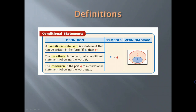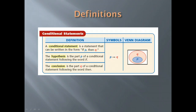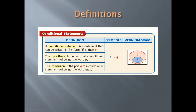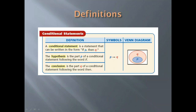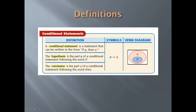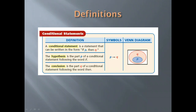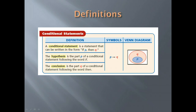Let's start with the definition. A conditional statement is a statement that can be written in the form: if P, then Q. The hypothesis is the P part of a conditional statement following the word 'if.' The conclusion is the Q part, and it follows the word 'then.' In symbols, we write P with an arrow pointing to Q. This says P implies Q. We can also draw a Venn diagram that demonstrates the same idea.